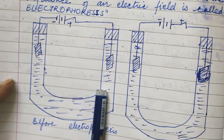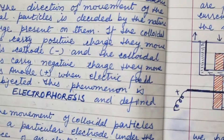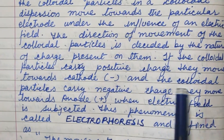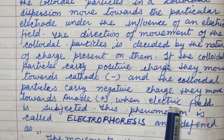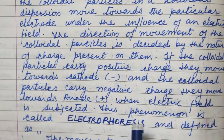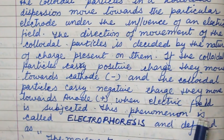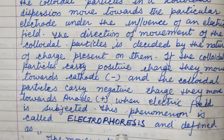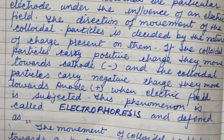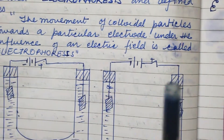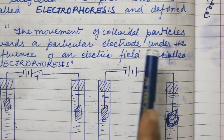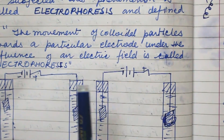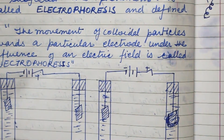If the colloidal particle carries positive charge, they move towards the cathode, that is the negative electrode. And if the colloidal particle carries negative charge, they move to the anode, which is the positive electrode, when the electric field is applied. This phenomenon is known as electrophoresis. We can define it as: the movement of colloidal particles towards a particular electrode under the influence of an electric field is called electrophoresis.